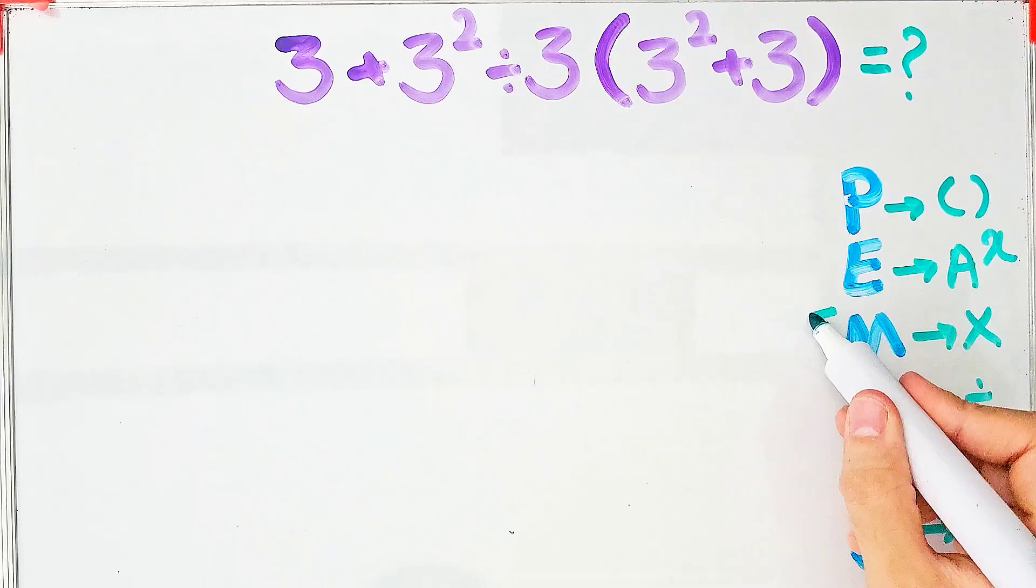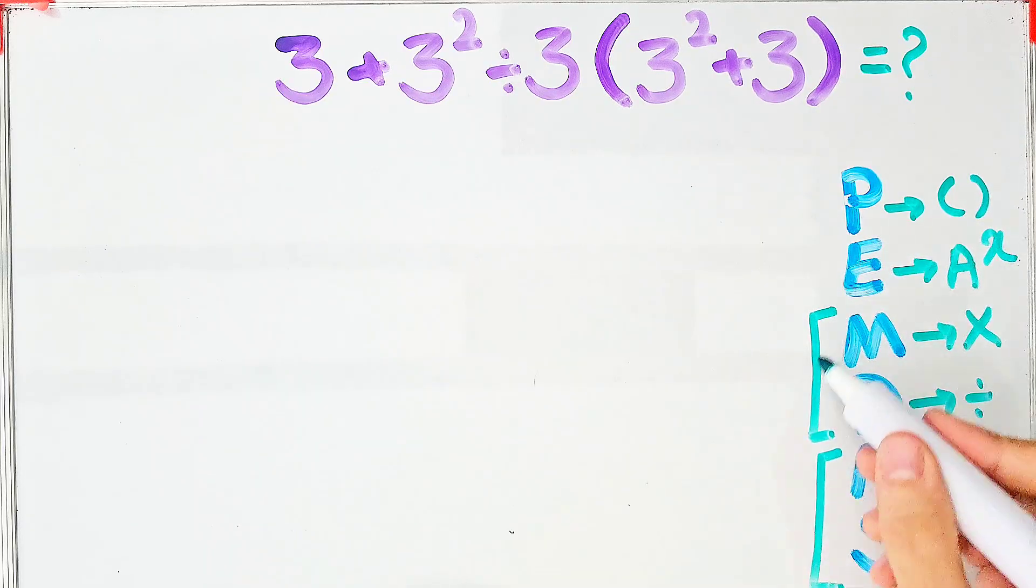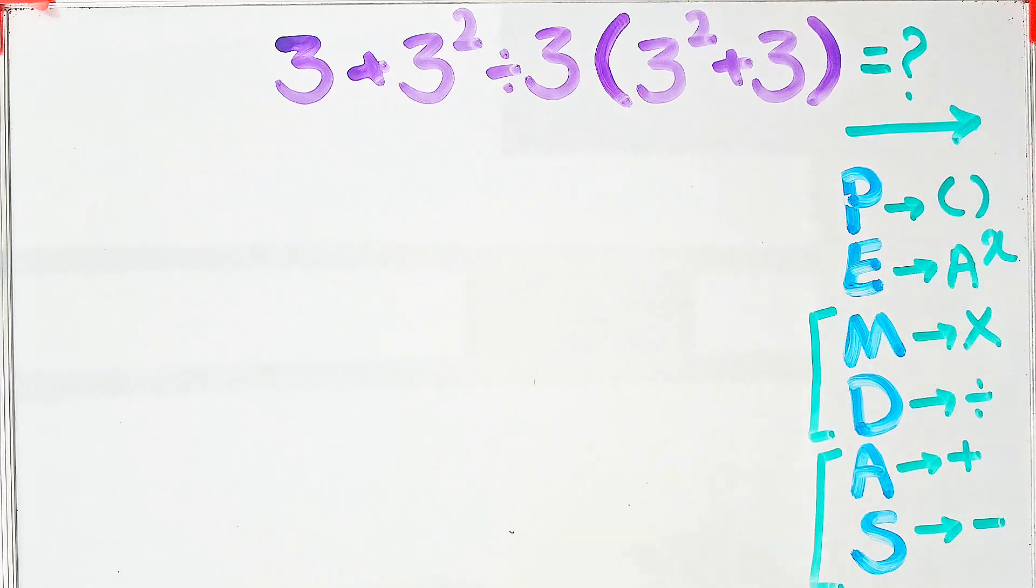Multiplication and division have the same level of priority. Also addition and subtraction have the same priority. When we have both in an expression, we start from the left and simplify the question. According to the PEMDAS rule,